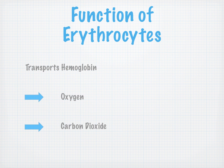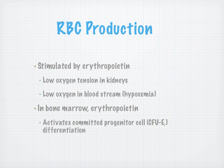Function of the erythrocytes: transports hemoglobin, oxygen, and carbon dioxide. Red blood cell production is stimulated by EPO — erythropoietin — under low oxygen tension in the kidneys and low oxygen in the bloodstream, or hypoxemia. In the bone marrow, EPO activates the committed progenitor cells, or colony forming units, for differentiation.